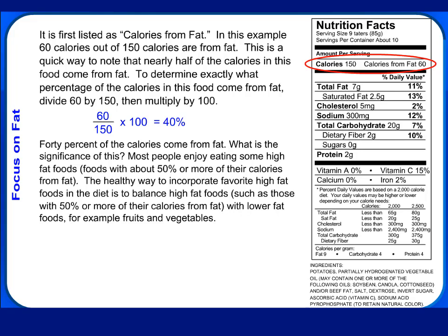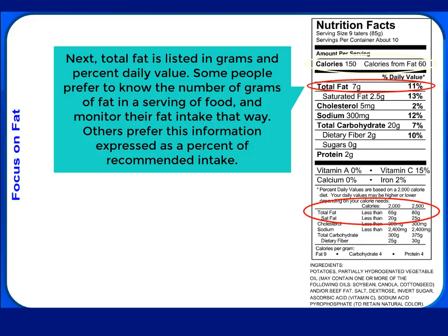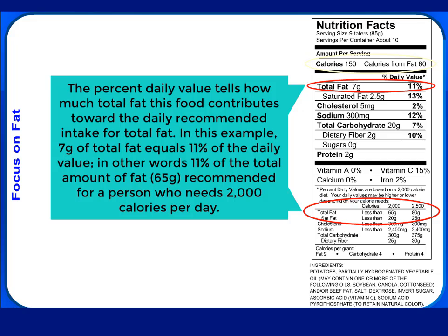40% of the calories come from fat. Most people enjoy eating some high-fat foods — foods with about 50% or more of their calories from fat. The healthy way to incorporate favorite high-fat foods in the diet is to balance them with lower-fat foods, such as fruits and vegetables. Next, total fat is listed in grams and percent daily value. Some people prefer to know the number of grams of fat in a serving, while others prefer this information expressed as a percent of recommended intake. The percent daily value tells how much total fat this food contributes toward the daily recommended intake. In this example, 7 grams of total fat equals 11% of the daily value — that is, 11% of the 65 grams recommended for a person who needs 2,000 calories per day.